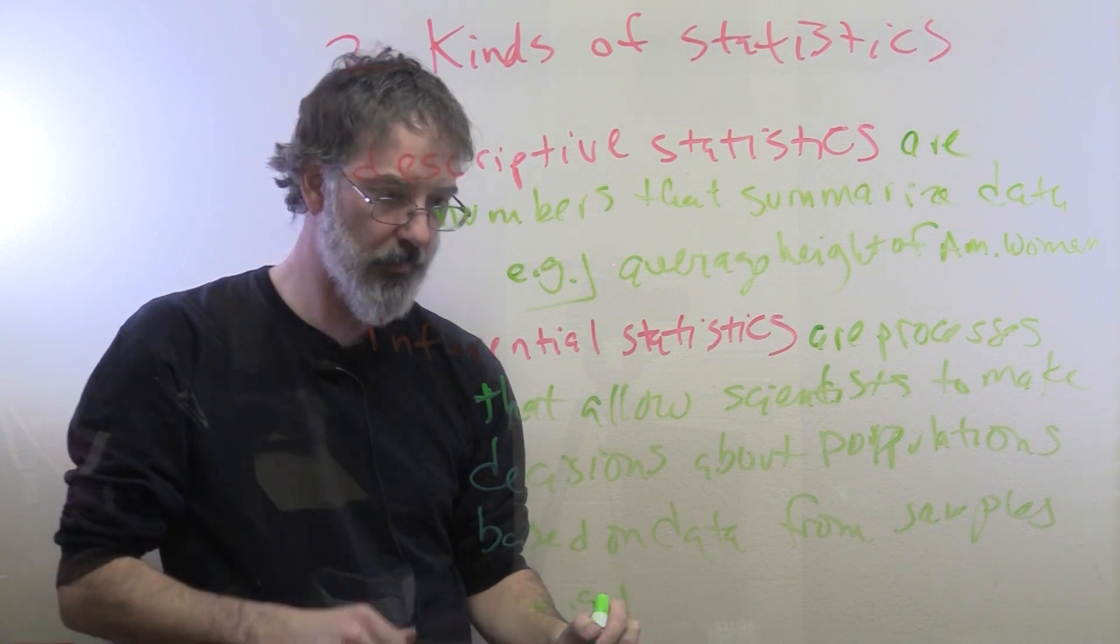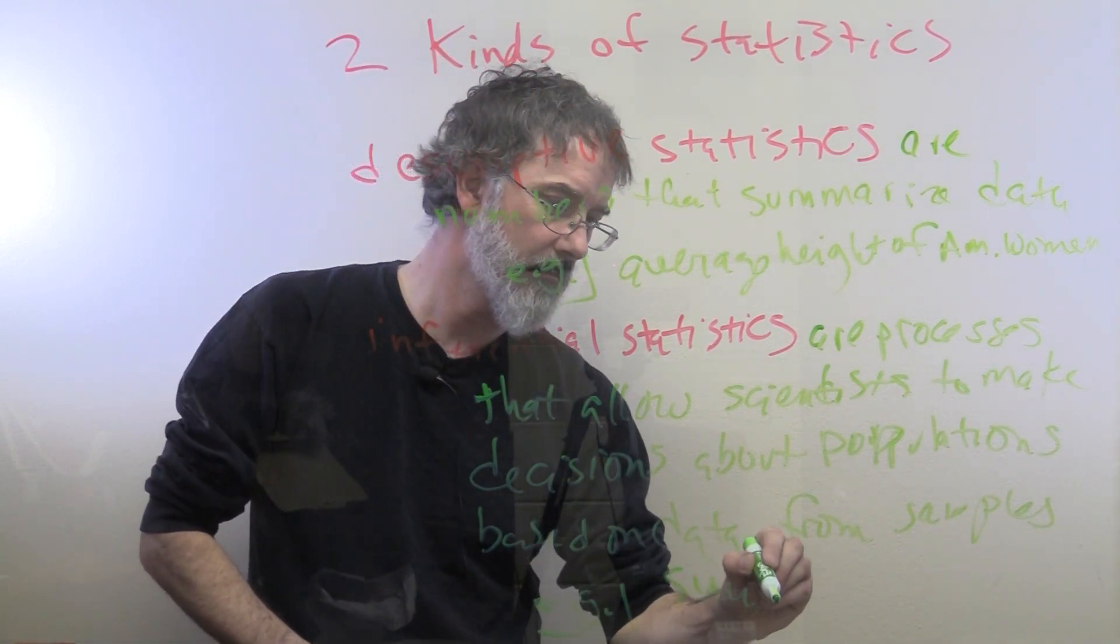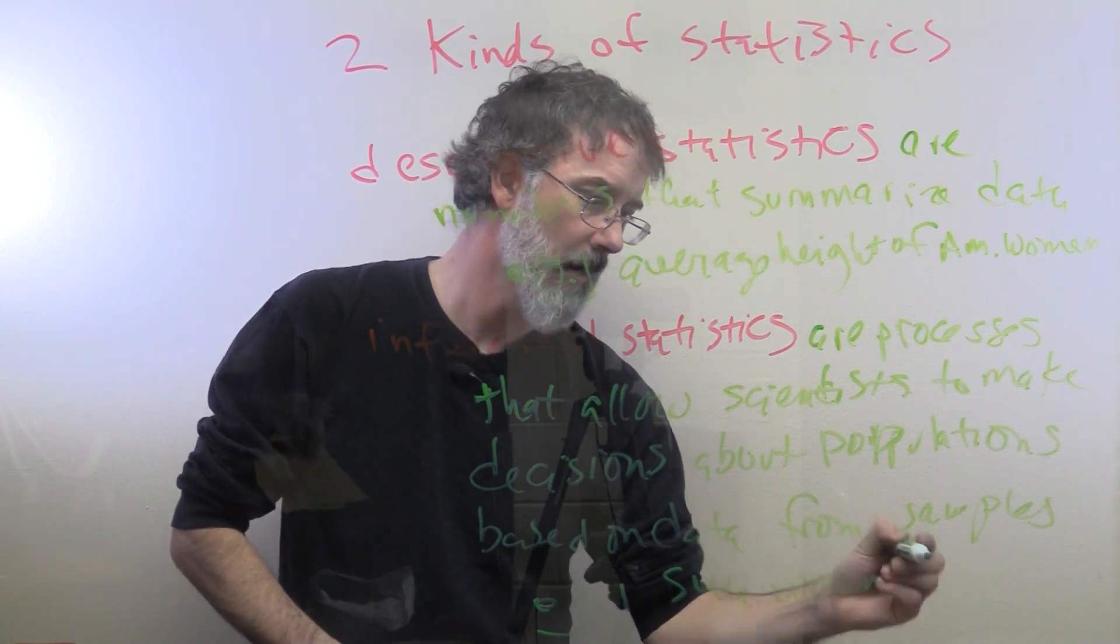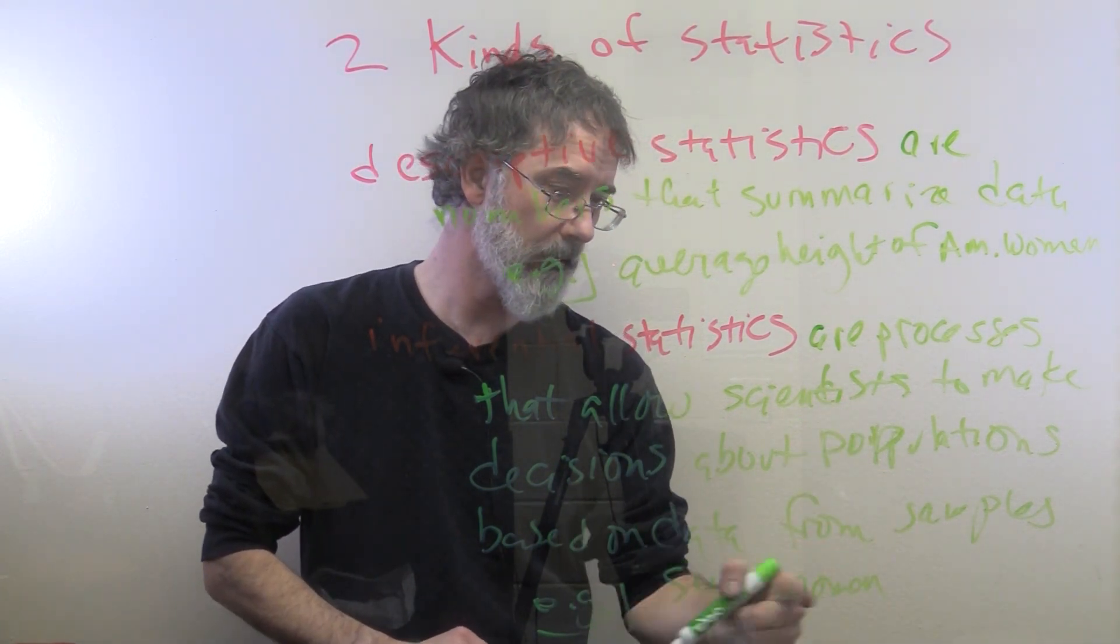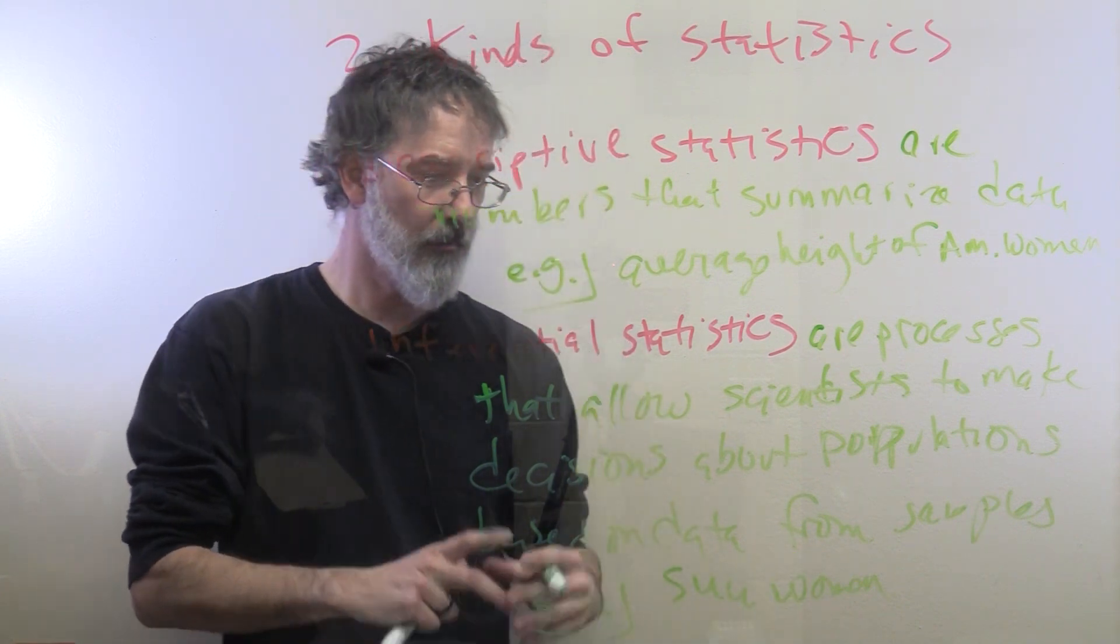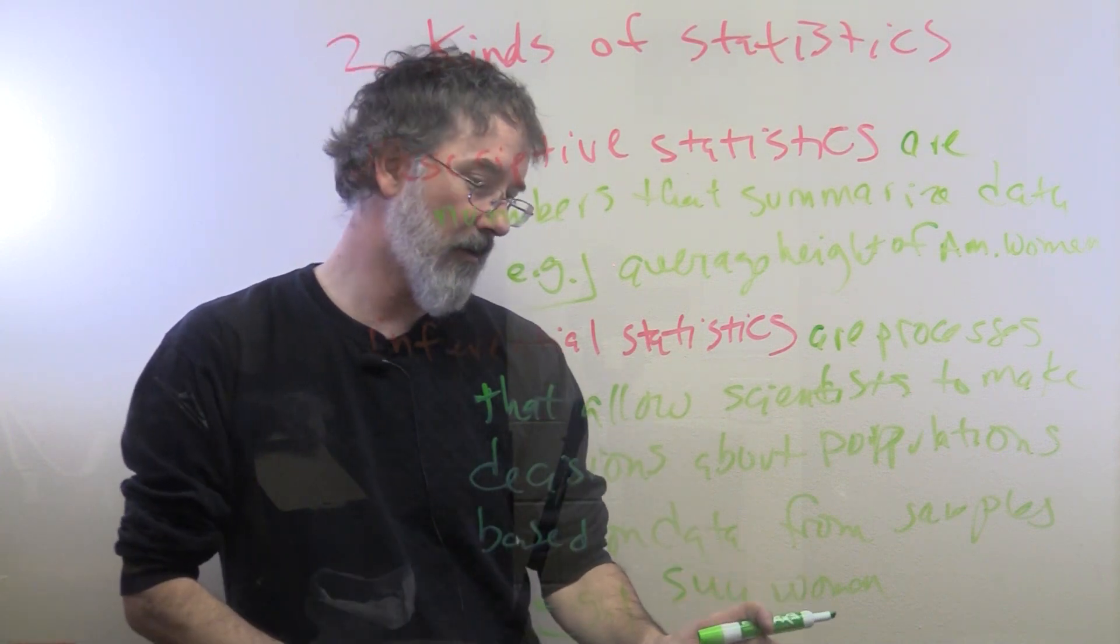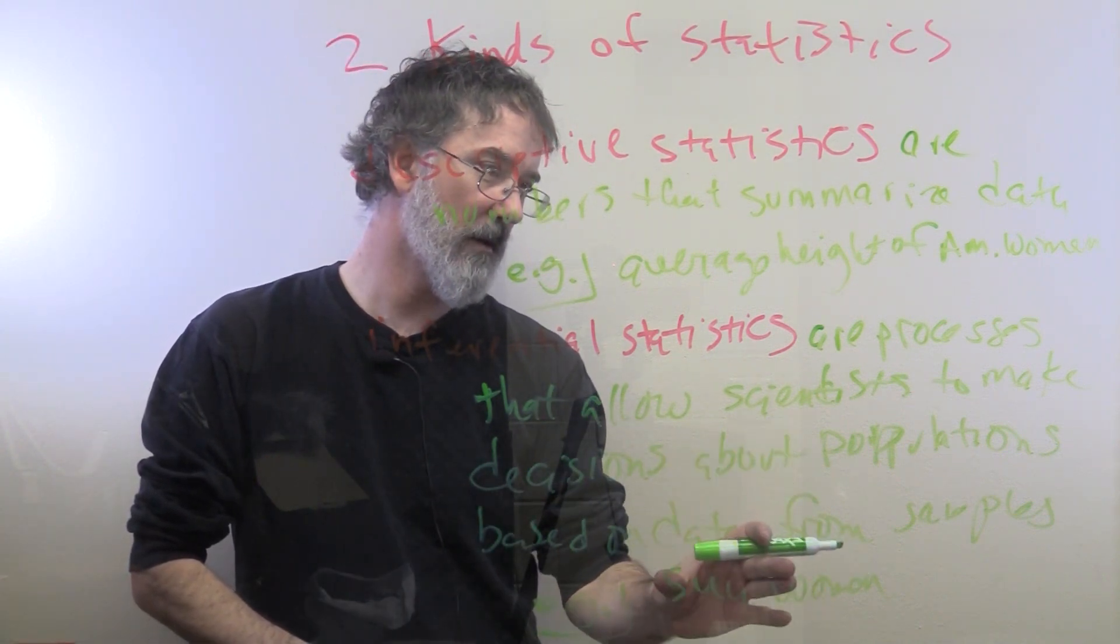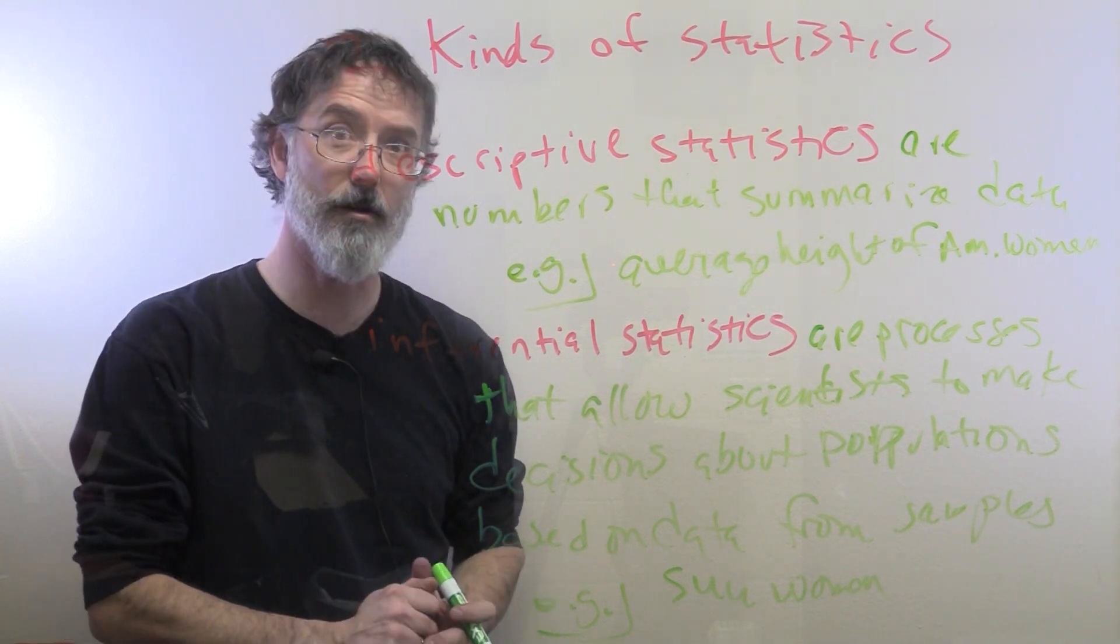populations based on data from samples. So, for example, is it the case that SUU women are taller or shorter than all American women? If we just have a sample of SUU women, we could run some inferential statistics on that data and make a decision about whether or not SUU women are taller or shorter than American women more generally.